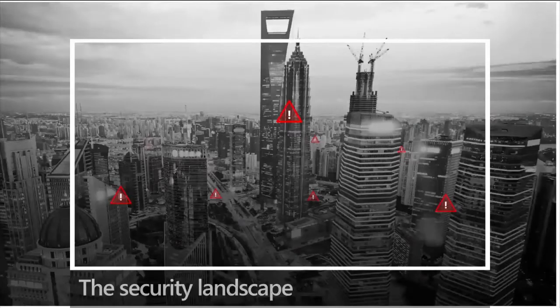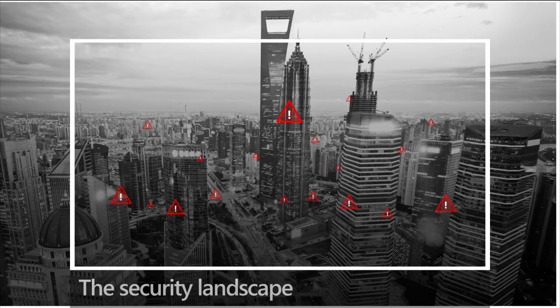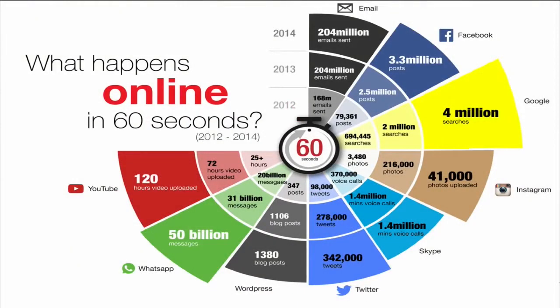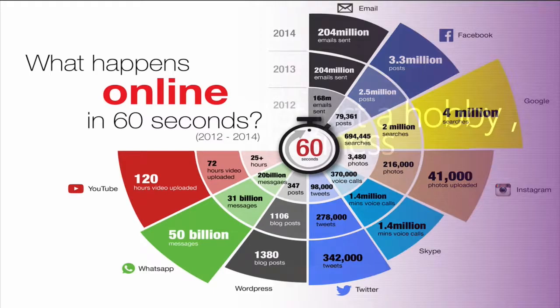Let's start with the security landscape. We know there are lots of changes — the only thing that doesn't change is change itself. People are really active on the internet, and so many things happen online every minute. Microsoft's approach of mobility first, cloud first means we're going to be even more involved in being online.